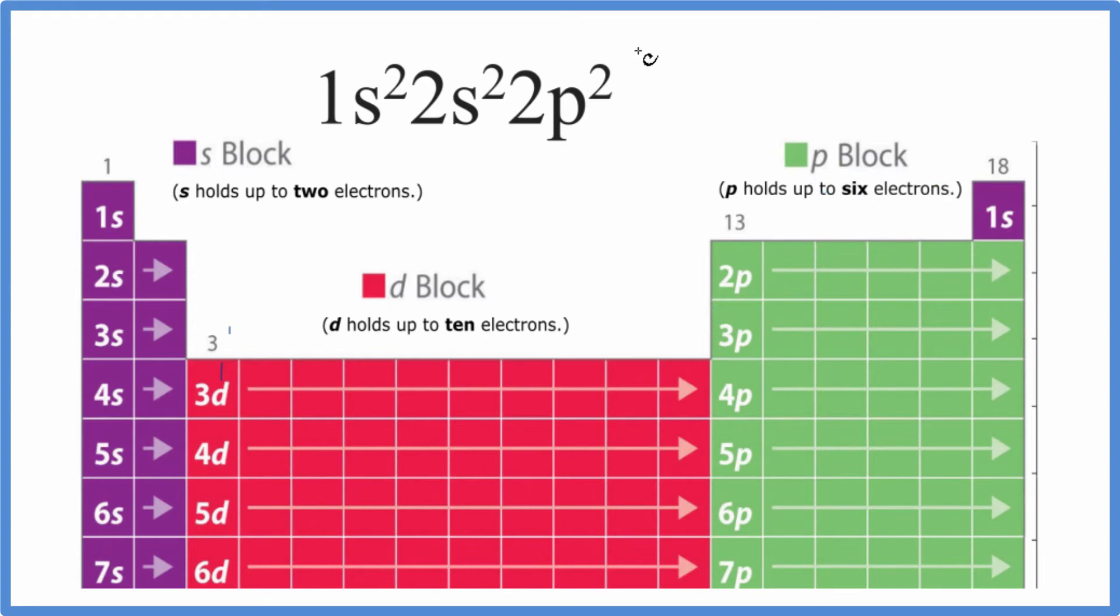This configuration here ends in 2p2. So we just need to find the element here that would be 2p2. So we go down to the second row or period. Here's 2p1 and 2p2. So this element right here will end in 2p2. This will be its electron configuration.